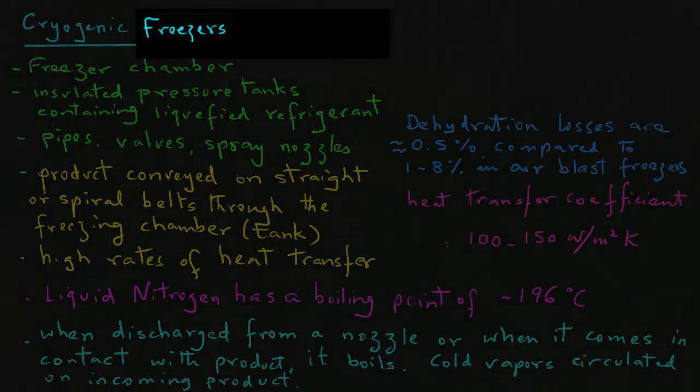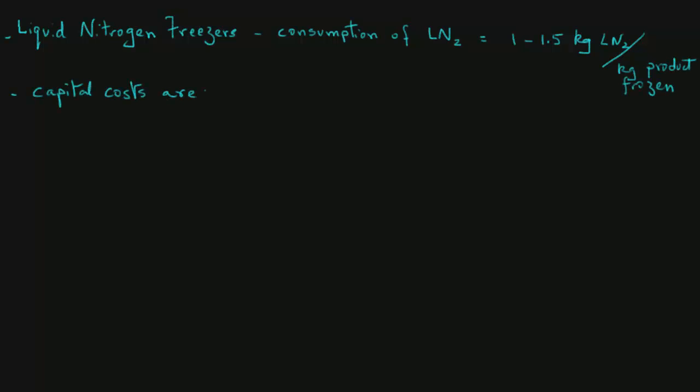If the final freezing is also carried out in the cryogenic freezer, then in case of freezers that use liquid nitrogen, typically the liquid nitrogen consumption varies from one to one and a half kilograms per kilogram of product. The investment costs are quite low, but the operating costs can be high because the cryogen, after it boils into vapor state, is lost into the atmosphere.